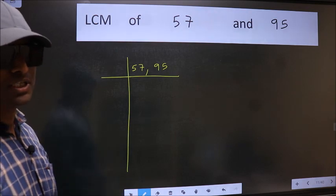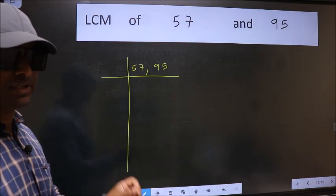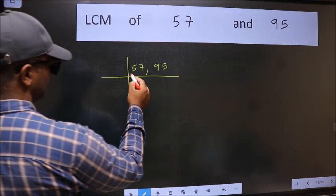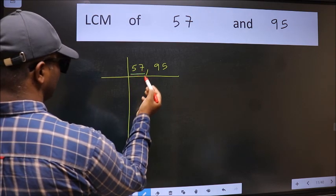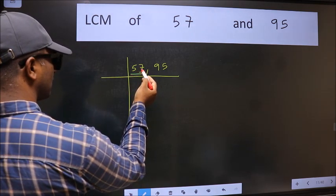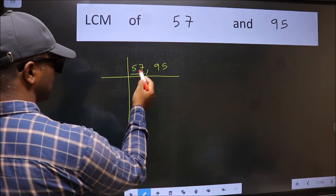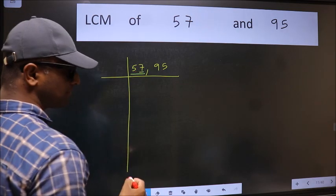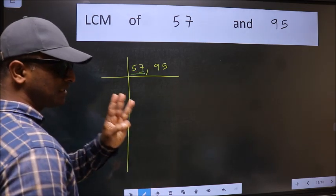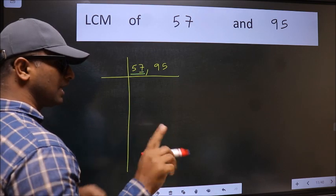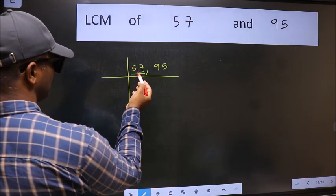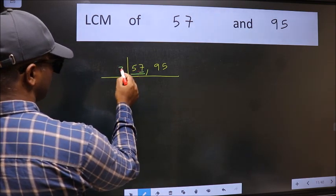Now you should focus on the first number, which is 57. The last digit is 7, not an even number, so this number is not divisible by 2. The next prime number is 3, and this number is divisible by 3. So take 3.